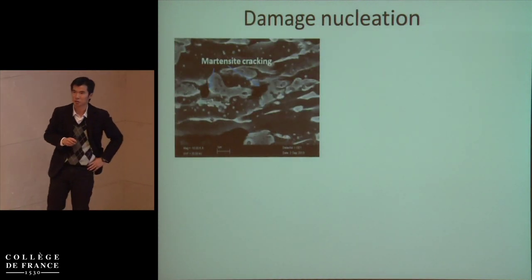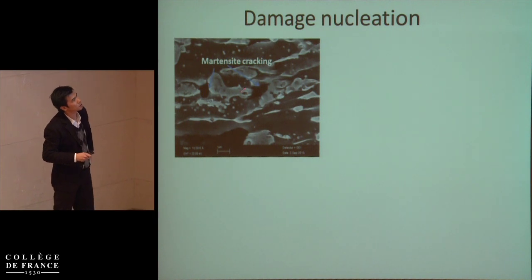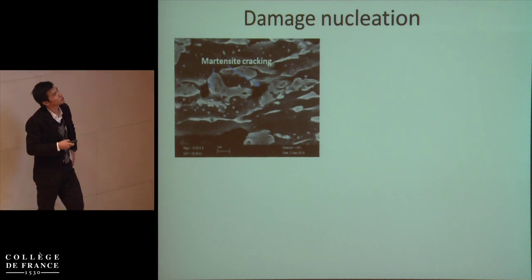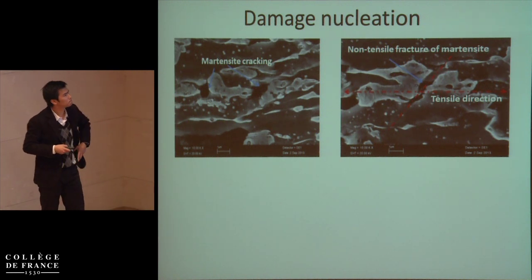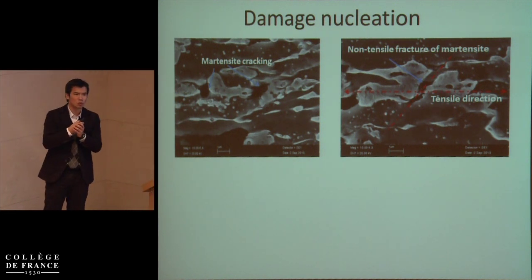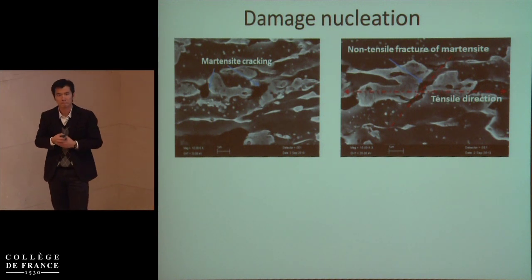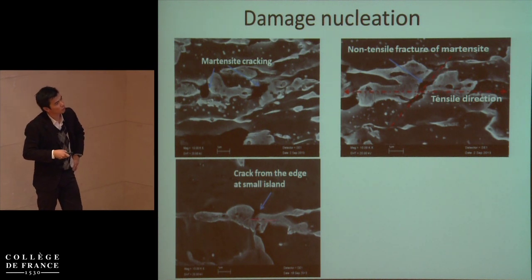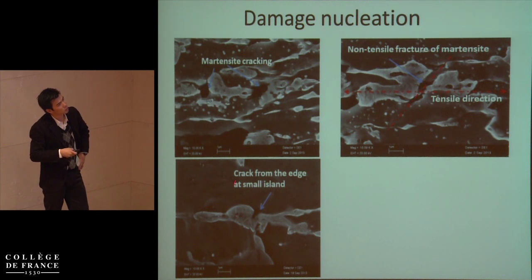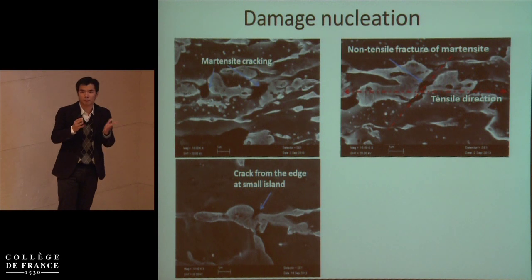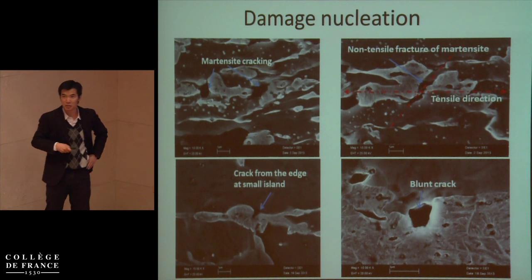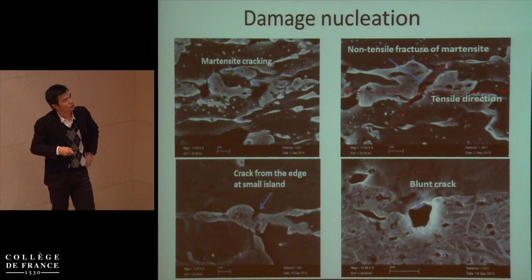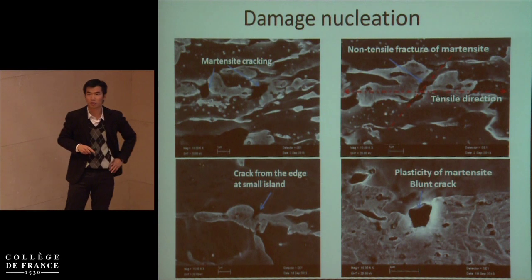What we are interested in is damage nucleation. Notice the position of carbide — it is quite easy to observe martensite cracking, and sometimes we can observe martensite cracks in an intermittent manner. Since our design is at the grain scale, this is not enough to prove that our idea of graded martensite is working. But for small martensite islands we can observe that cracks initiate from the edge or from the phase boundary, and as to large martensite islands — or martensite bands — it is easy to observe cracks initiating from the phase boundary. The cracks are very blunt, indicating that the local ductility of martensite can be very good.